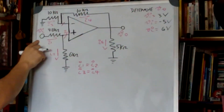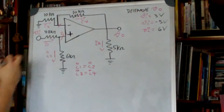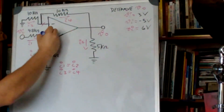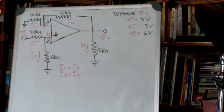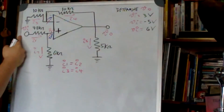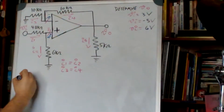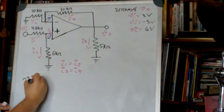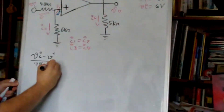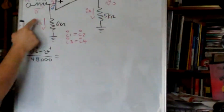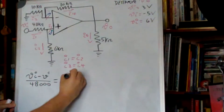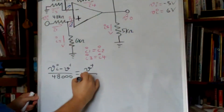Let me define i1. First I'm going to name this node V plus and this node V minus. So the current i1 is (Vi minus V plus) over 48k, and this is equal to i2, which is V plus minus ground, so V plus over 6k.